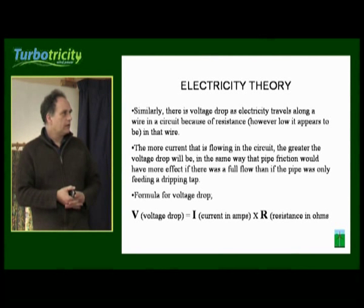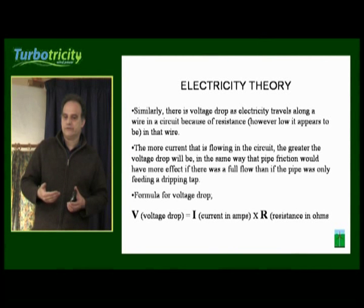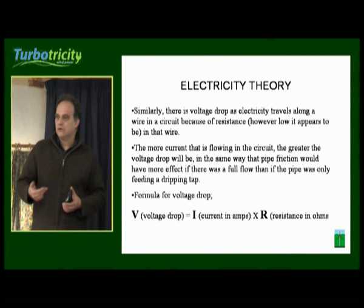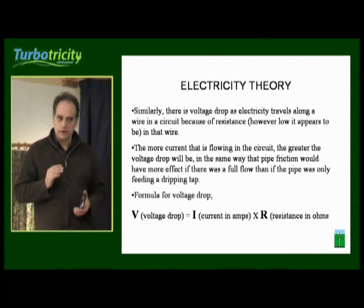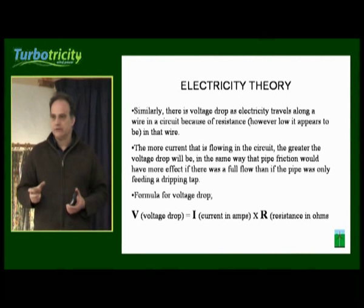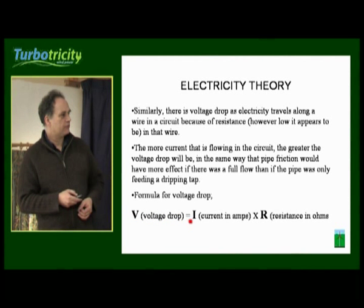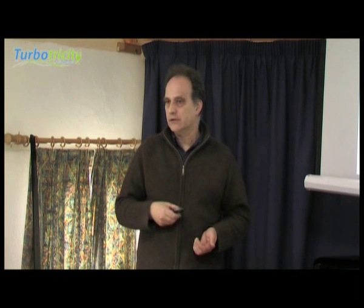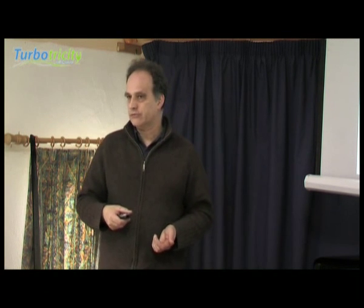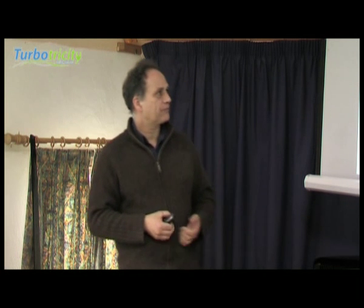There's a voltage drop as the electricity travels along a wire, and that voltage drop increases with either the current or with the resistance. The faster the flow through the pipe, similarly, the pressure would drop. So the voltage drop is the current in amps multiplied by the resistance in ohms. If there was only a dripping tap running through that circuit, you'd have a very small voltage drop. Once the current really got up, that's when the voltage drop would increase.